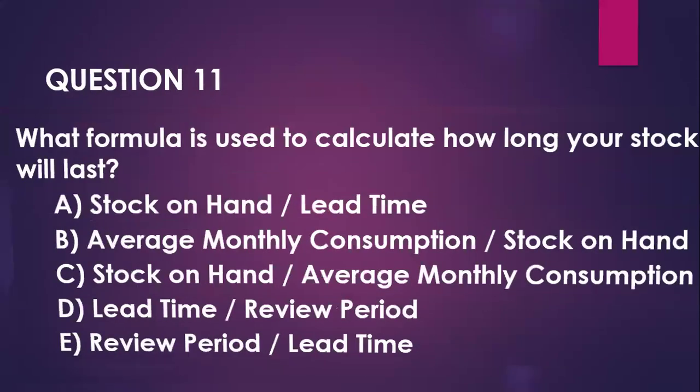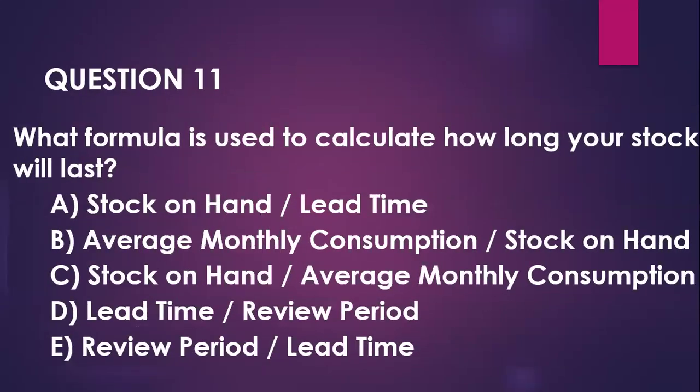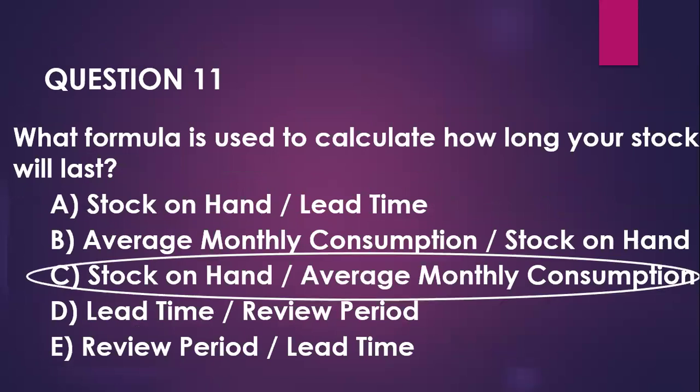Question number eleven: what formula is used to calculate how long your stock lasts? This is usually your stock on hand divided by your average monthly consumption. So if you have 1,000 units and your average monthly consumption is 250, you know that you have four months of stock remaining.